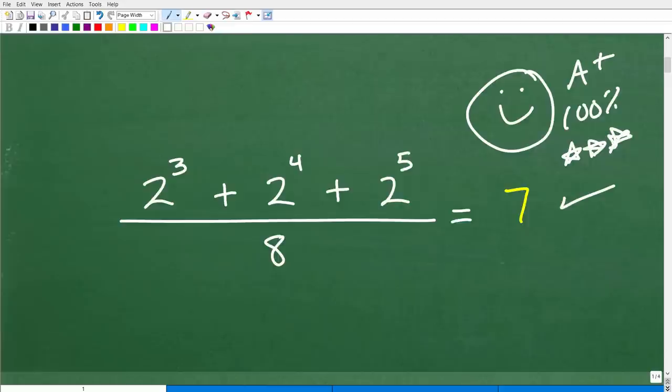Now, the way you got this answer, well, there's a couple different approaches you could have taken, right? You could have figured out what 2³ is. And, of course, that means 2 times 2 times 2 or 2 times itself 3 times. And then you figure out what 2 times itself 4 times is. Of course, that's 16. And then here we have 2 to the 5th. So you could have figured all this out and added all this up and divided by 8. And if you took that approach, well, listen, excellent. As long as you got the right answer, that's what counts. But I'm going to show you the approach that I'm thinking about.